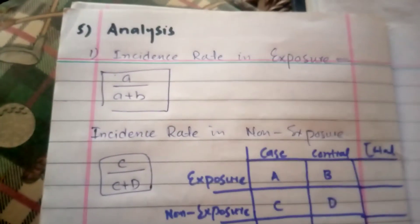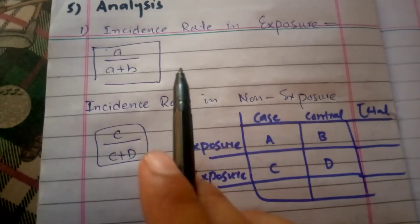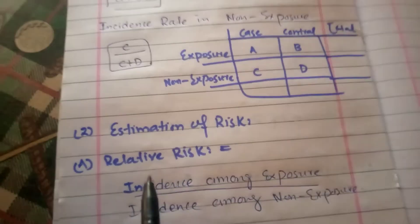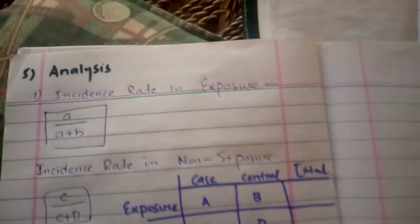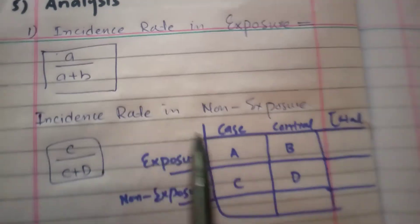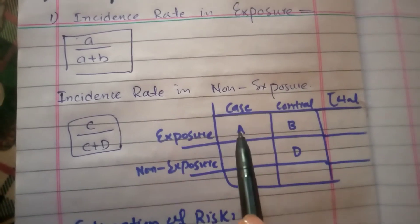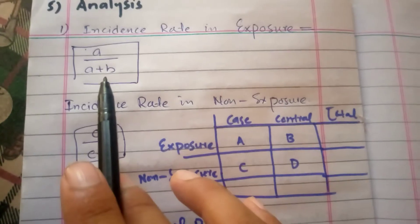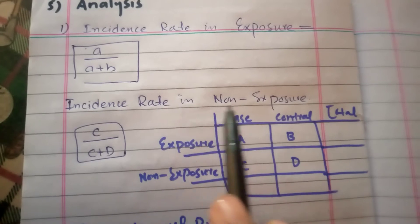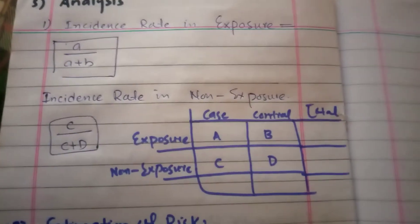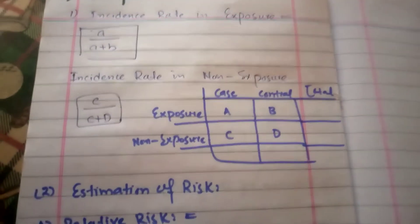The next step is analysis. This is the final step - incidence rate in exposure. By relative risk and attributable risk. Incidence rate in exposure, the formula is A divided by A plus B. Incidence rate in non-exposure is C divided by C plus D.